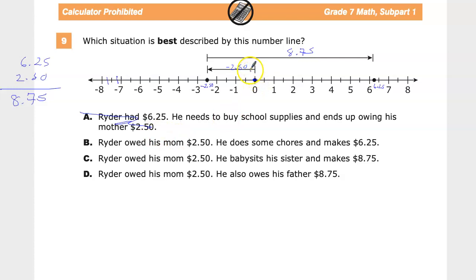Ryder owed his mom $2.50. He does some chores and makes $6.25. Remember how I told you it's probably a good idea to write this number down? This is how you know this is not the correct answer because he owes his mom. So that totally makes sense to me. But if he only earns $6.25, it's not going to get him back up to $6.25. It's just going to get him to, if I took $6.25 and subtracted $2.50 at that point. I could figure out where it'll get him. $3.75. So I'd only get him like right up in here. So that's not enough.